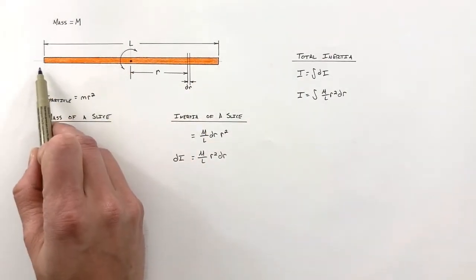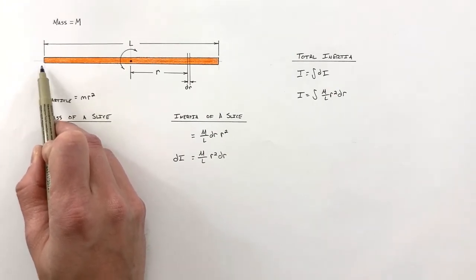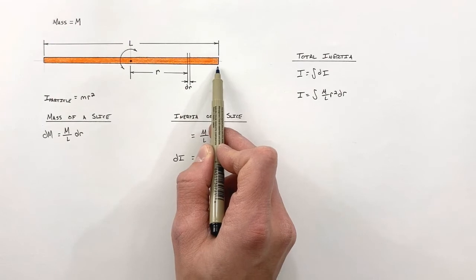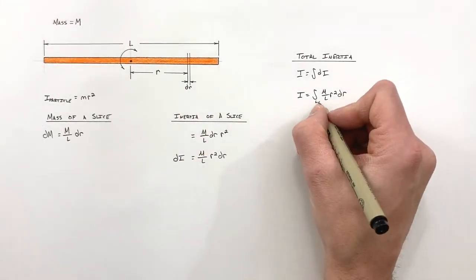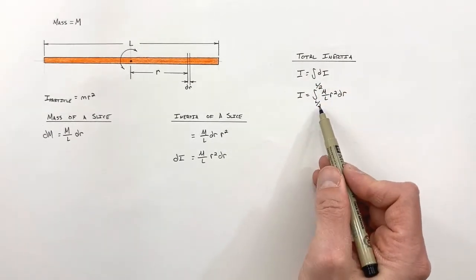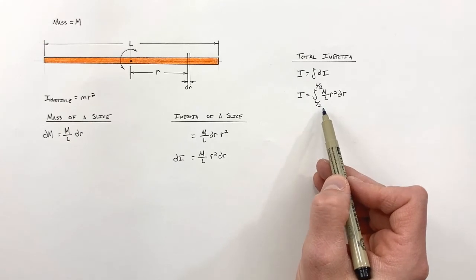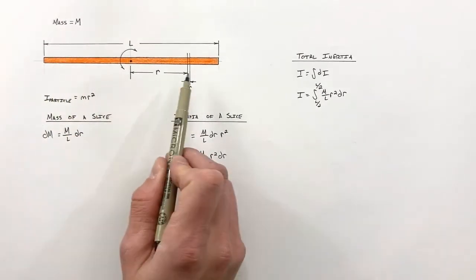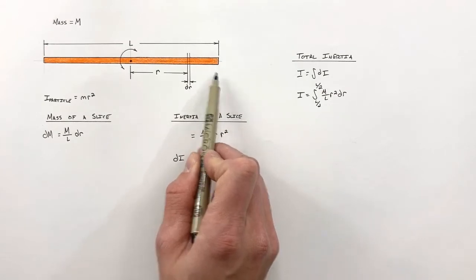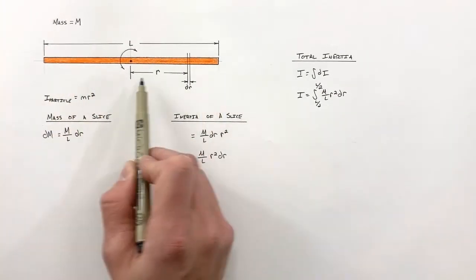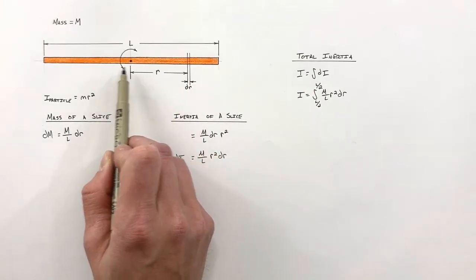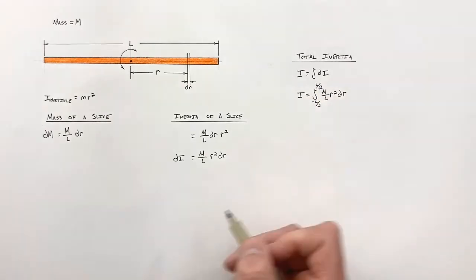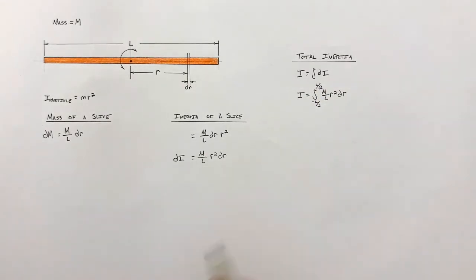The difference between rotating around the center versus the end is really just our limits of integration. In this case, we start at the edge of the rod, which is L/2 away from the center, and integrate all the way to L/2 on the opposite side. Because radius is a vector, the radius in one direction is negative relative to the other, so we integrate from negative L/2 to positive L/2.